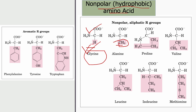Proline is also non-polar and aliphatic. Although it looks aromatic, it is aliphatic. Proline is the exception among amino acids because it contains a secondary amine — the amine group is connected to the carbon of the side chain ring. These aliphatic amino acids are non-polar and do not react with water. There are also some aromatic amino acids which are also non-polar.